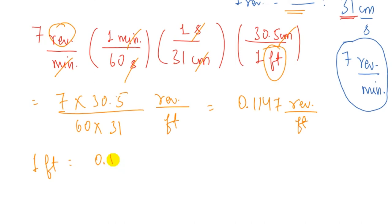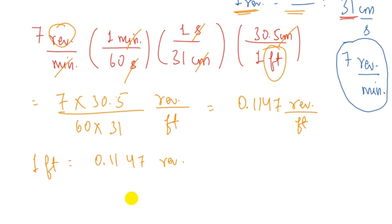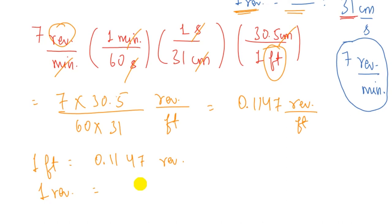We need the distance traveled per one revolution, so using the unitary method: one revolution equals 1 foot ÷ 0.1147, which equals 8.7 feet. So for every one revolution, Huygens traveled 8.7 feet from the mothership. This is the answer for part B.